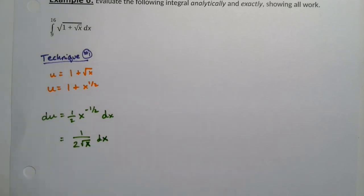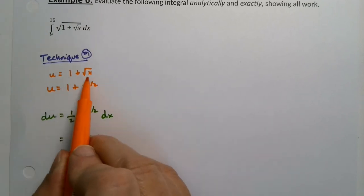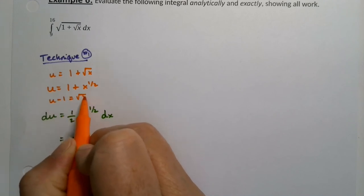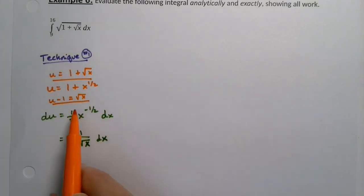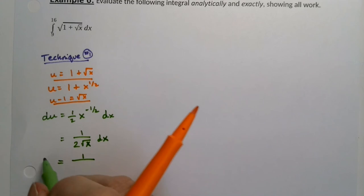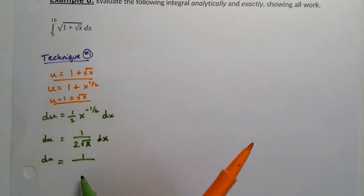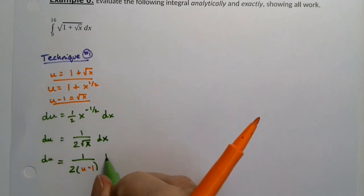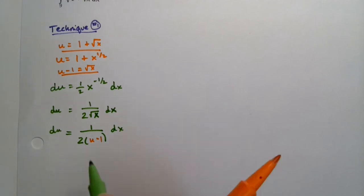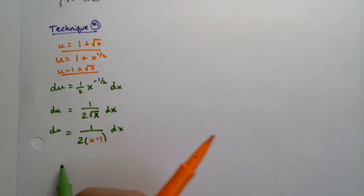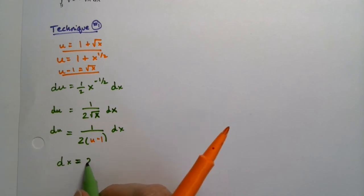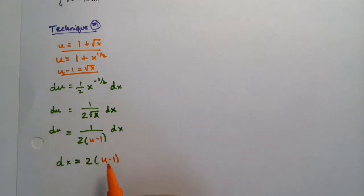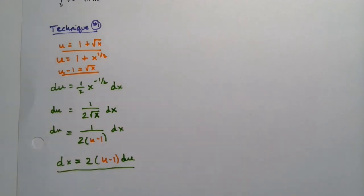If u is 1 plus the square root of x, then u minus 1 equals the square root of x. So the square root of x down here can be expressed as u minus 1, meaning 1 over 2(u minus 1) equals du. That means dx equals 2 times (u minus 1) du. This is an extra tricky u-substitution.